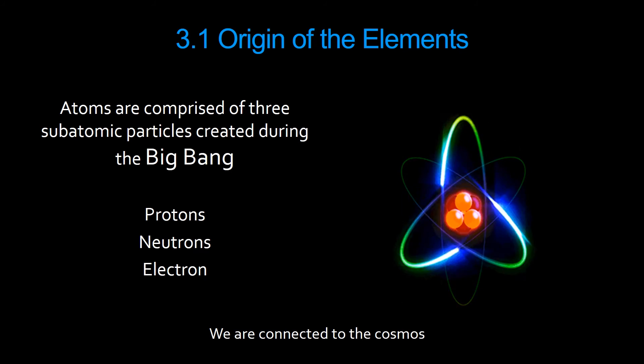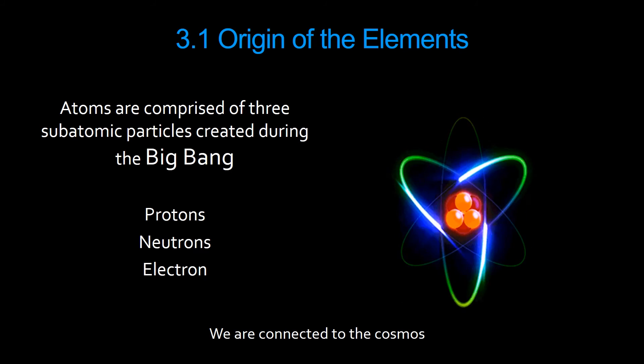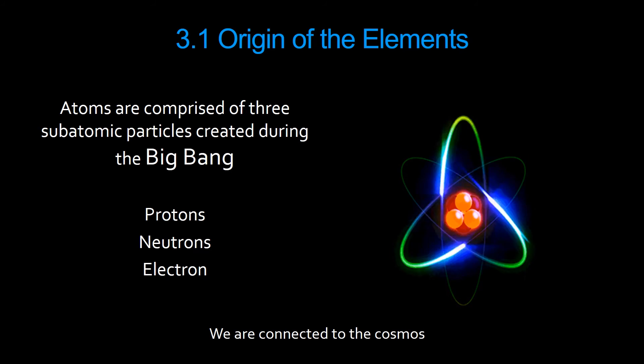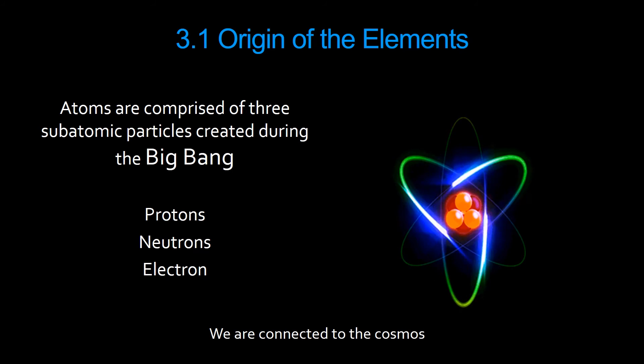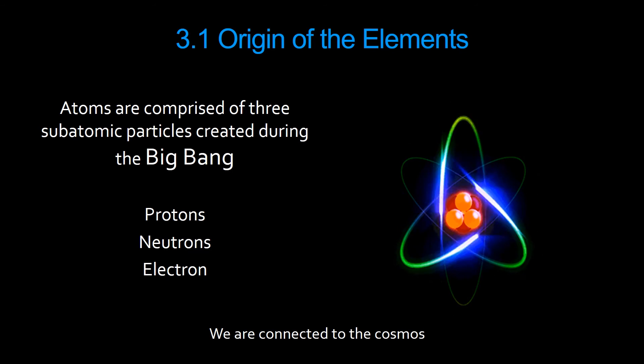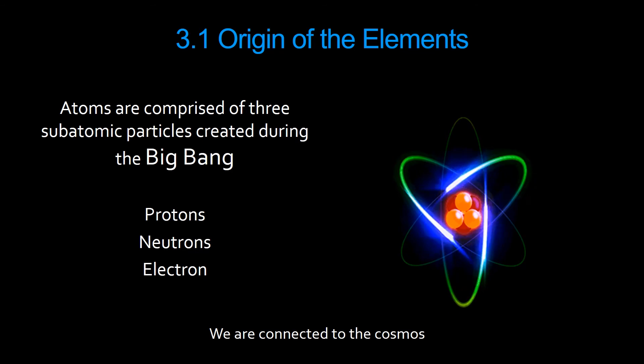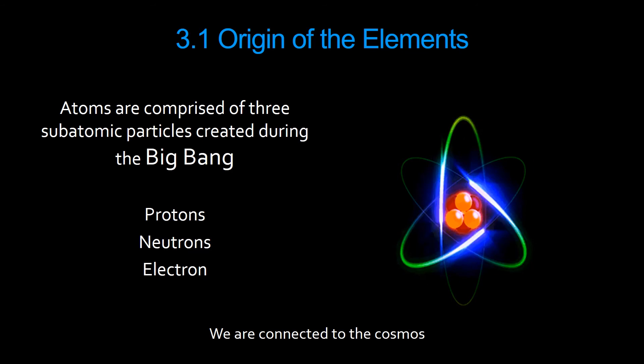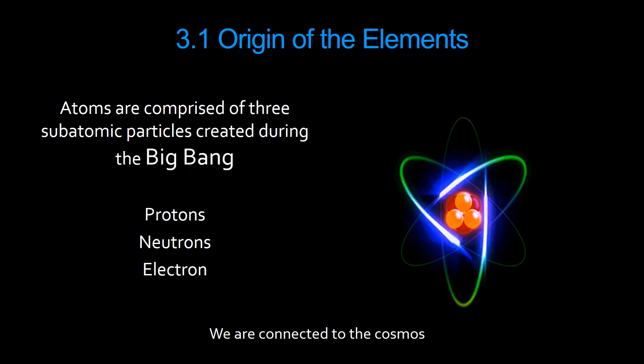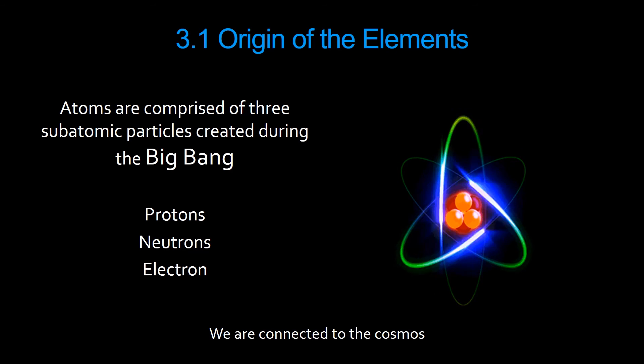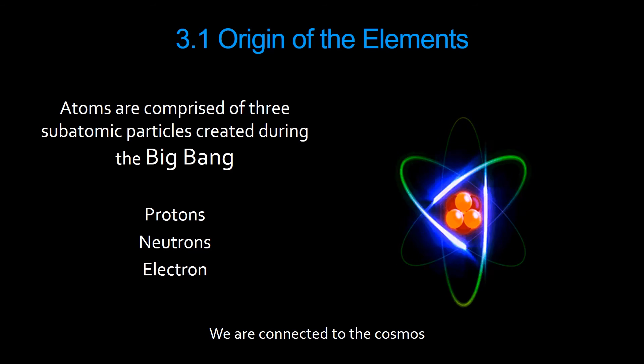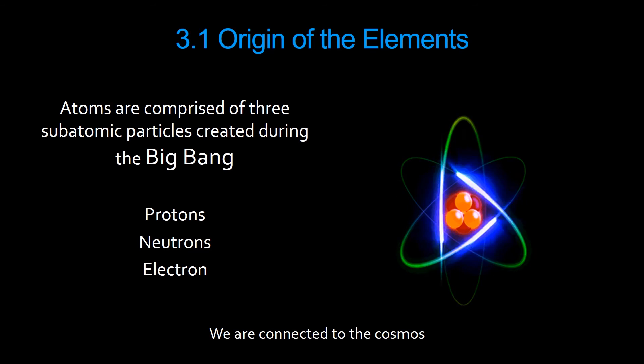These three subatomic particles were created in the Big Bang 13.7 billion years ago. They are the basic fundamental building blocks of the universe. So think about that. At your most fundamental level, you are made up of protons, neutrons, and electrons. And most of the protons and electrons inside of you are over 13.7 billion years old.